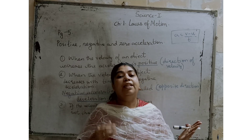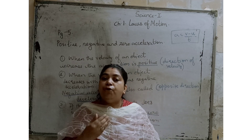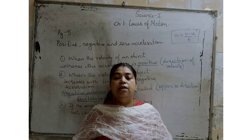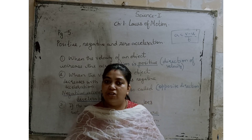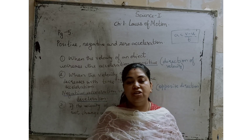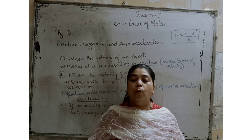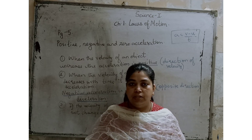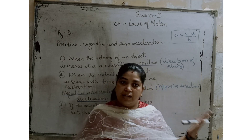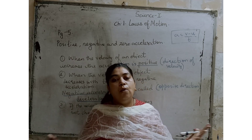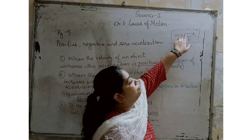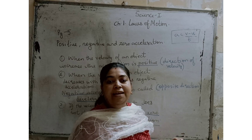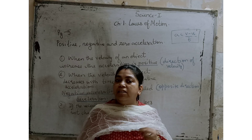We also learned what acceleration is. The rate of change of velocity is called acceleration. We represent acceleration as: a = change in velocity divided by time. The formula is a = (final velocity − initial velocity) / t, where final velocity minus initial velocity gives the change in velocity.